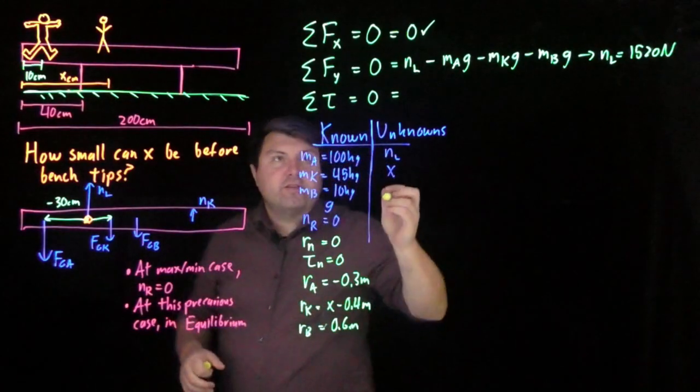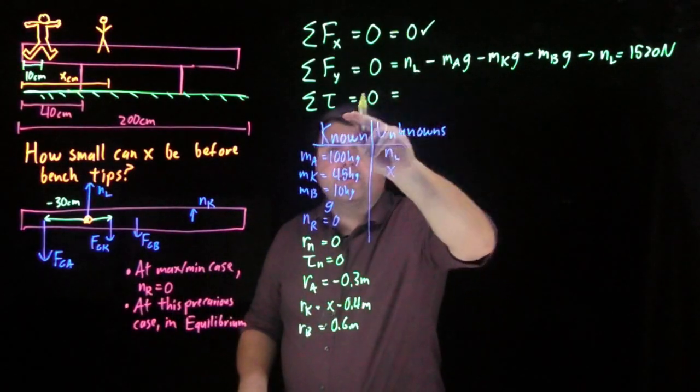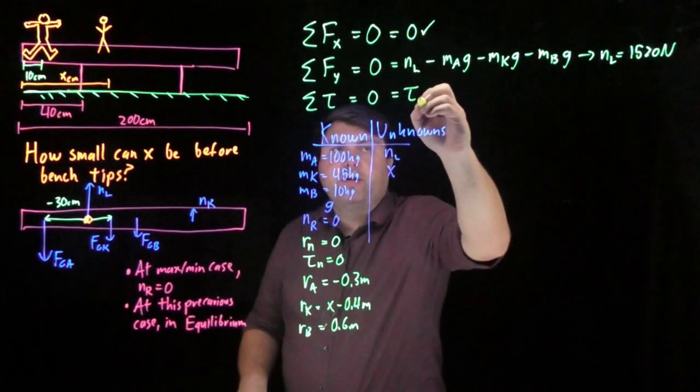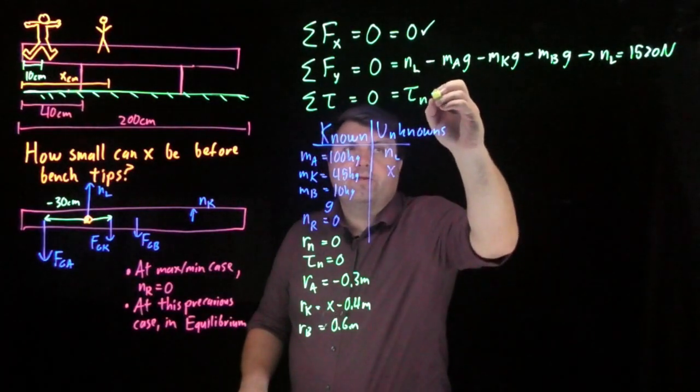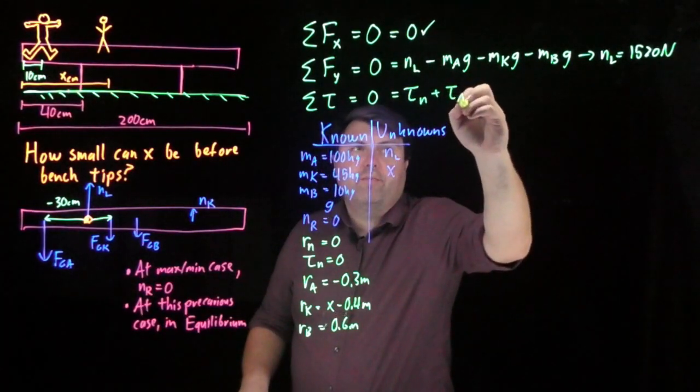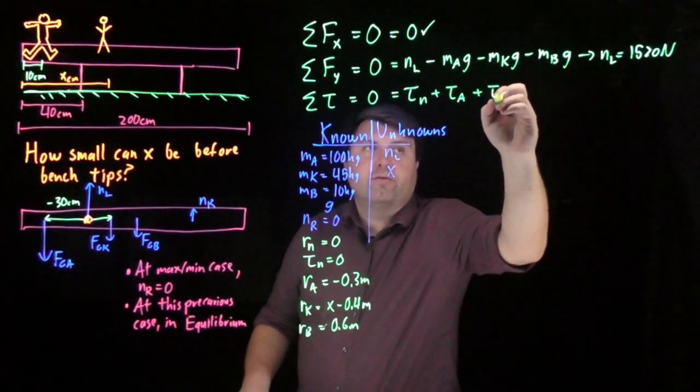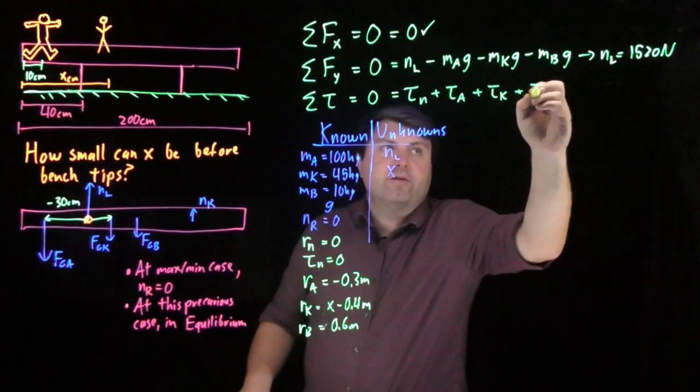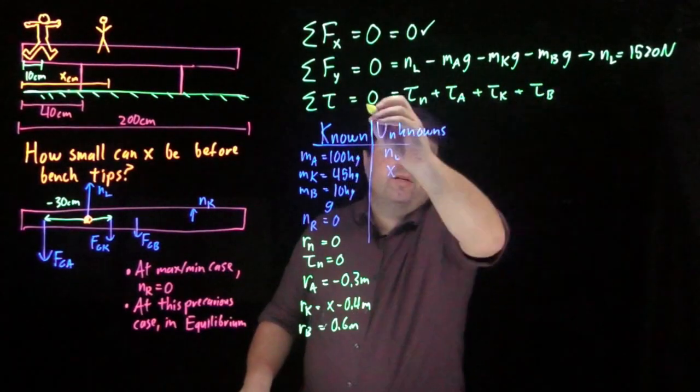Instead, we're lazy. And so what we can do as a lazy person is we can just go straight to this torque equation and we write that the torque from the normal force plus the torque from the adult plus the torque from the kid plus the torque from the bench is all equal to zero.